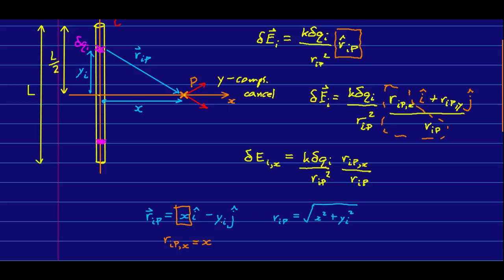Here is the r_IP vector, and we already know we need its x component, and we can just read that off, it's nothing more than x. And we'll also need its magnitude, which is like so.